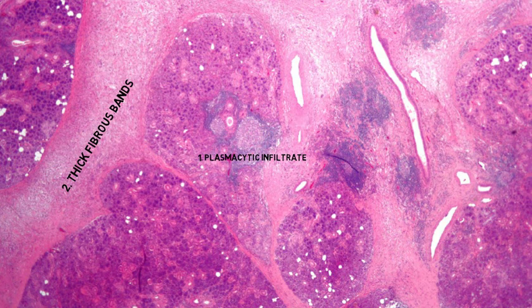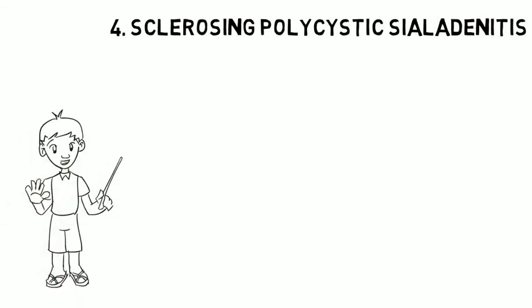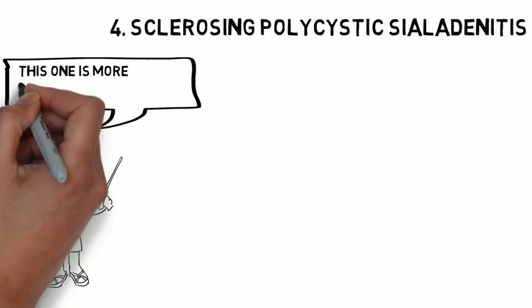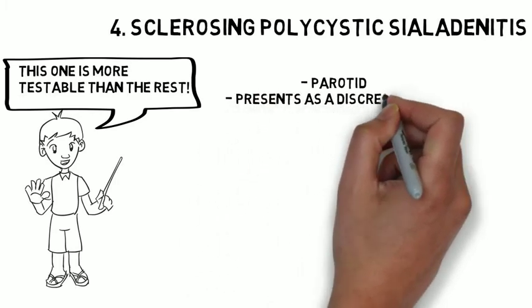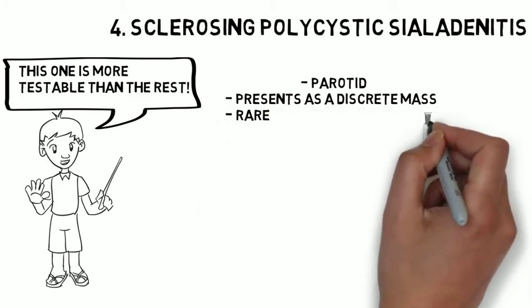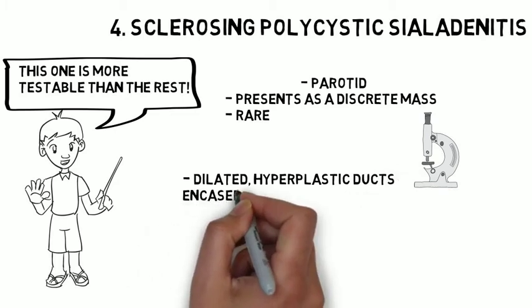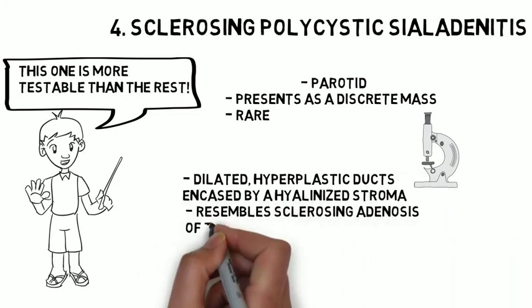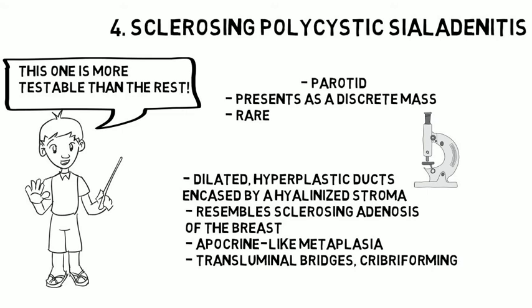Next is sclerosing polycystic sialadenitis — a more testable topic than the others. It tends to occur in the parotid, presents as a discrete mass, and is a rare lesion. Microscopically, you'll see dilated hyperplastic ducts encased in a hyalinized stroma, resembling sclerosing adenosis of the breast. You'll see apocrine metaplasia, transluminal bridges, and cribriforming, but most importantly there will be bright red eosinophilic cytoplasmic granules.